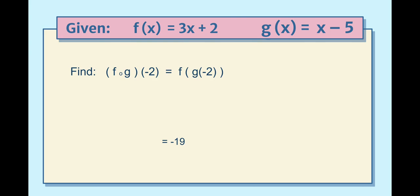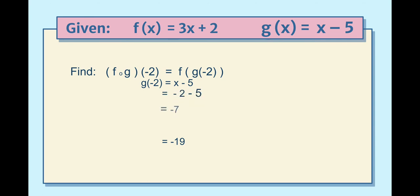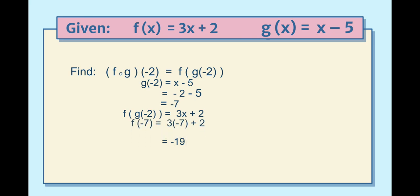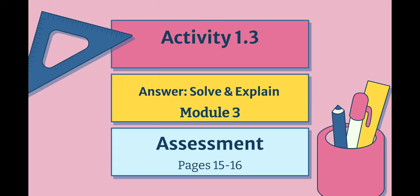To find (f ∘ g)(−2): first evaluate g(−2) using g(x) = x − 5, substituting x = −2: −2 − 5 = −7. Then substitute −7 into f(x) = 3x + 2: 3(−7) + 2 = −21 + 2 = −19. So the answer is −19.